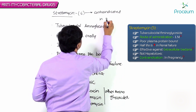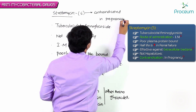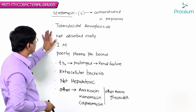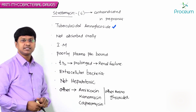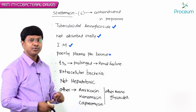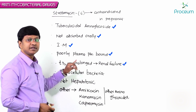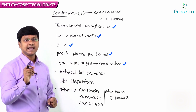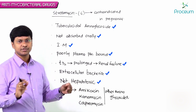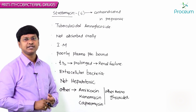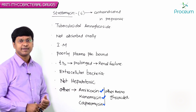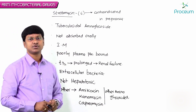In summary: streptomycin is a tuberculocidal aminoglycoside, not absorbed orally, administered by intramuscular injection, poorly plasma protein bound, half-life prolonged in renal failure, active only against extracellular bacteria, not hepatotoxic, other features similar to aminoglycosides. Related drugs are amikacin, kanamycin, and capreomycin. Streptomycin is contraindicated in pregnancy.